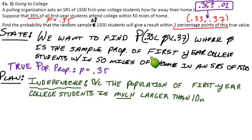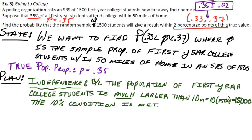So in this case, what is 10 times N? N is the sample size, so if 1,500 is our sample size, the population of first-year college students is much larger than 10 times 1,500, which is 15,000. So we're definitely safe on the independence thing. If we sample without replacement, we're totally fine. So the 10% condition is met.